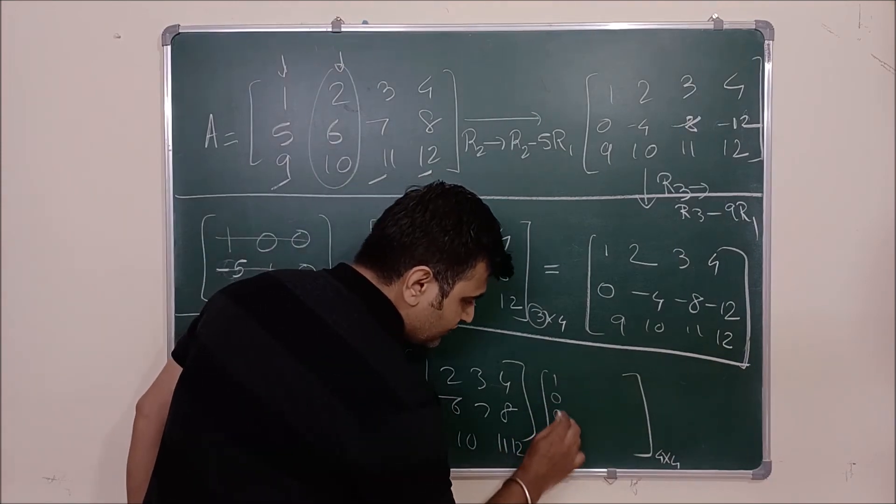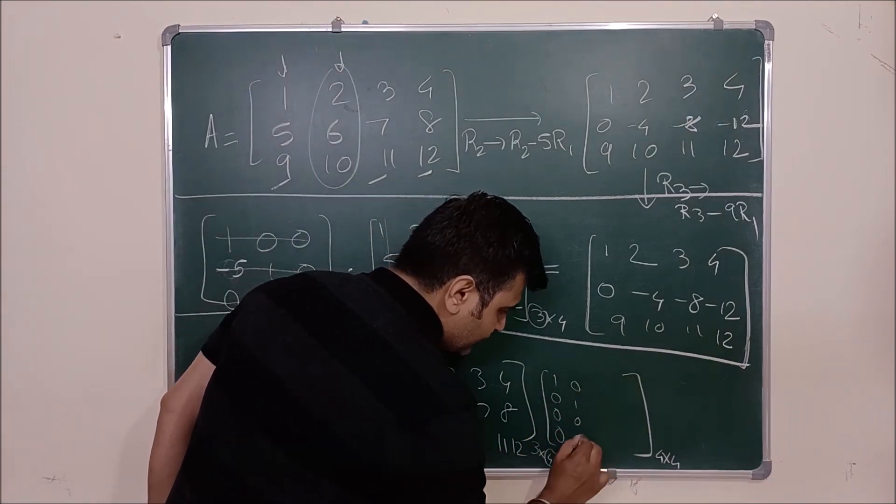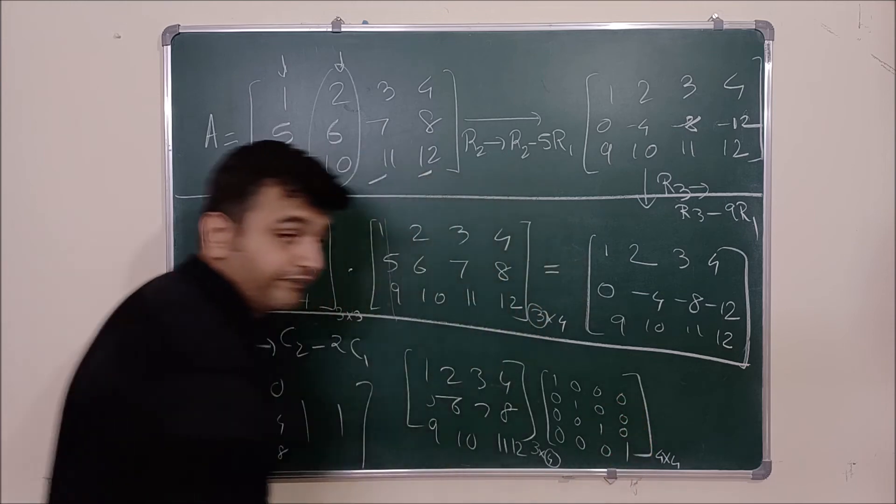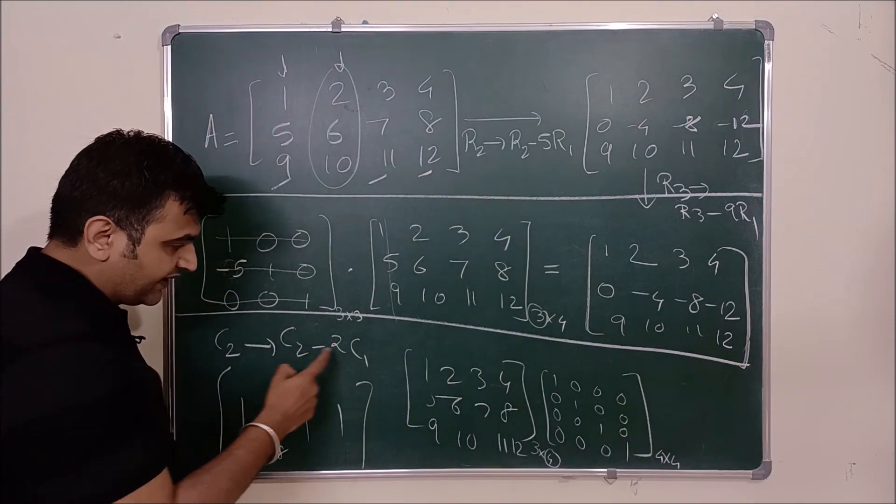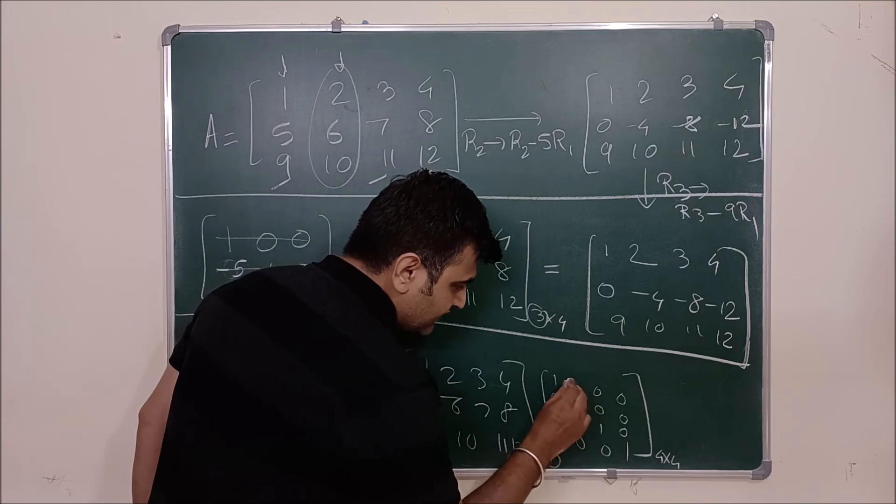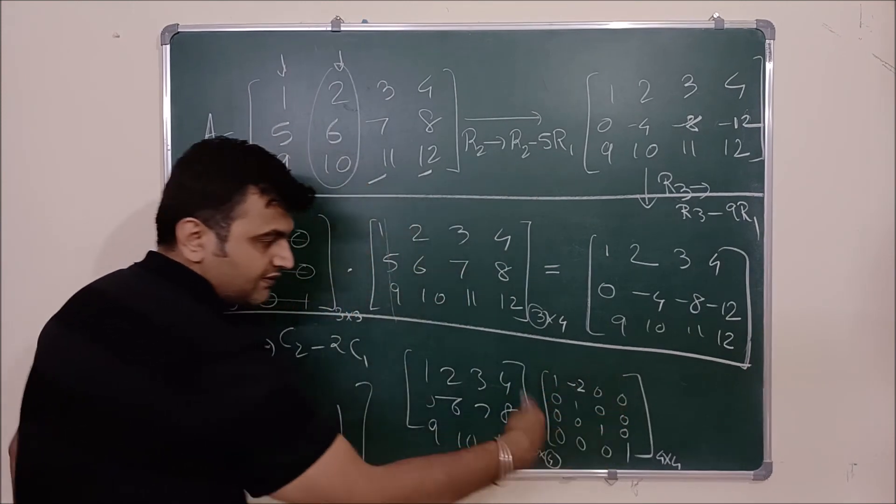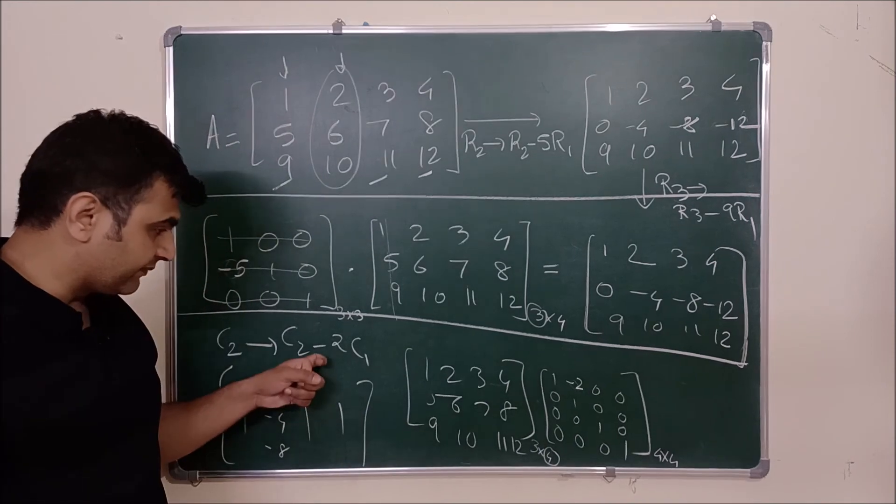So what is this? 1 0 0 0, 0 0 1 0, 0 0 1 0, 0 0 0 1. Now you do C2 minus 2 times C1. So 0 minus 2, 0 minus 2 is minus 2, 1 minus 0. So this is the matrix you get after applying this operation. And now if you do your normal matrix multiplication.